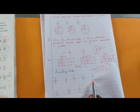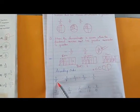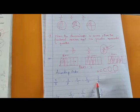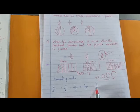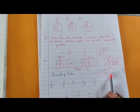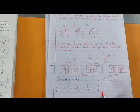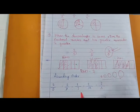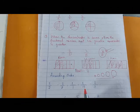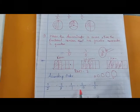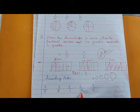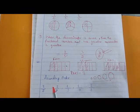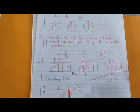Here, when the numerators are all same, the fractional number that has the smaller denominator is the greatest. So which denominator is the smallest? Three is the smallest — teen sub se chota hai, so that fractional number is the biggest — sub se bada. So we will place it last in ascending order. And 2 by 10 is the smallest because its denominator is the largest — denominator jab bara hota hai, woh fraction sub se chota hota hai.